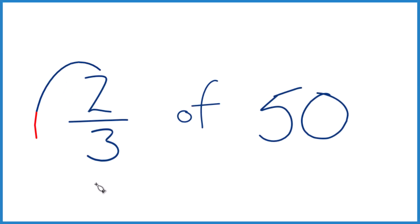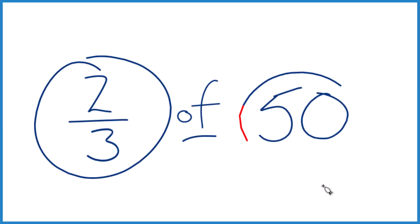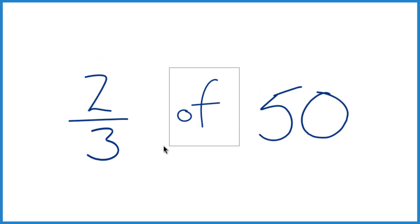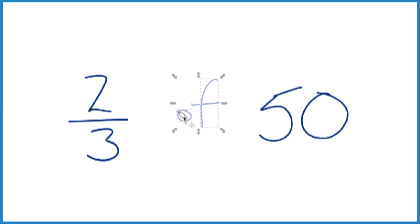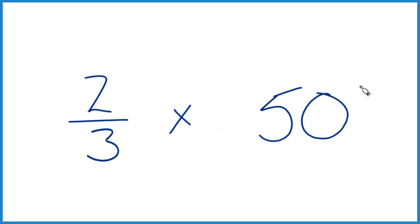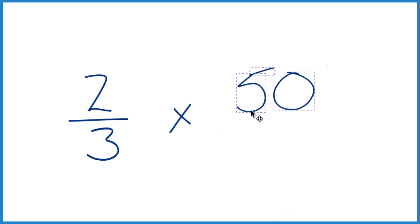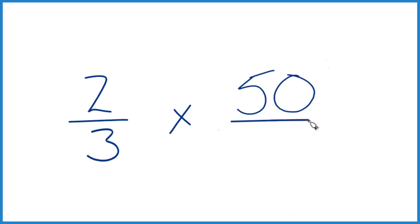Here's how you take two-thirds of 50. The word 'of' right there means multiplication — same thing. So we're looking at two-thirds times 50, and we could take this 50 and call it 50 over 1. It's still 50, but now everything lines up.